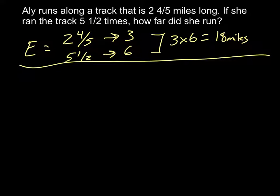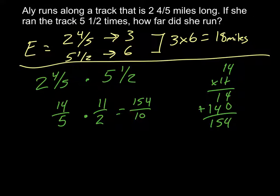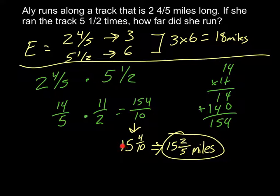When I solved it, I did my estimate first: I rounded 2 and four-fifths to 3 miles and rounded 5 and a half to 6, then did 3 times 6, giving an estimate of 18 miles. Then I copied the problem — 2 and four-fifths times 5 and a half — and converted to improper fractions: 14 fifths times 11 halves. I showed my multiplication work on the side: 14 times 11 equals 154, and 5 times 2 equals 10, giving 154 tenths. Simplifying gave me 15 and four-tenths, which simplifies further to 15 and two-fifths of a mile.